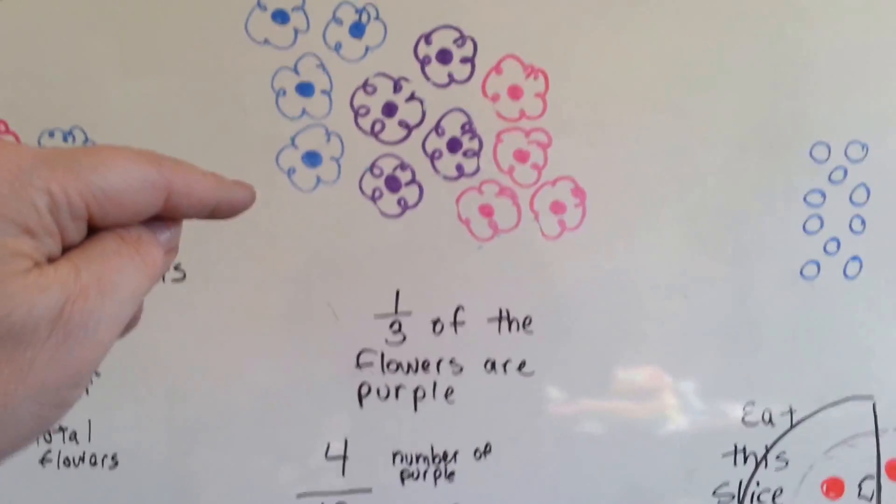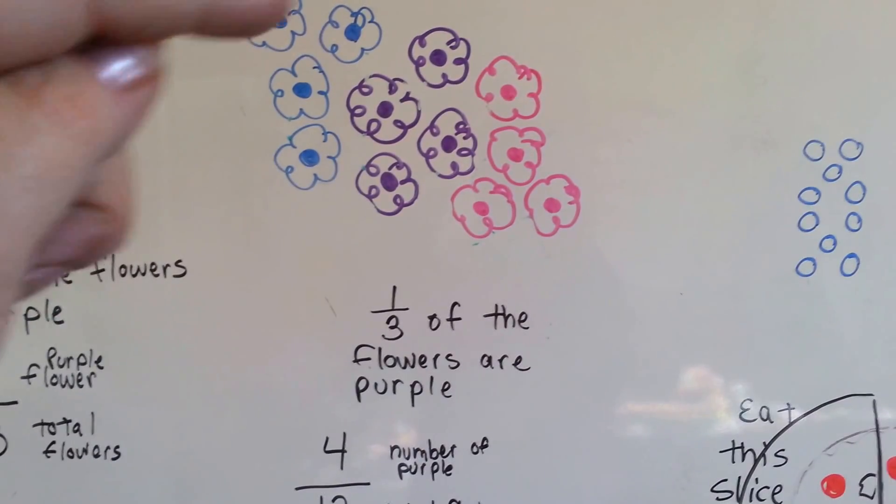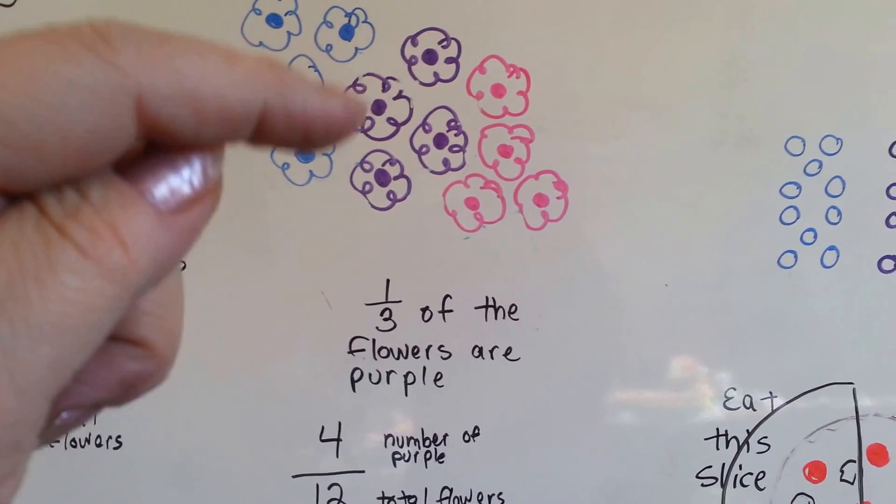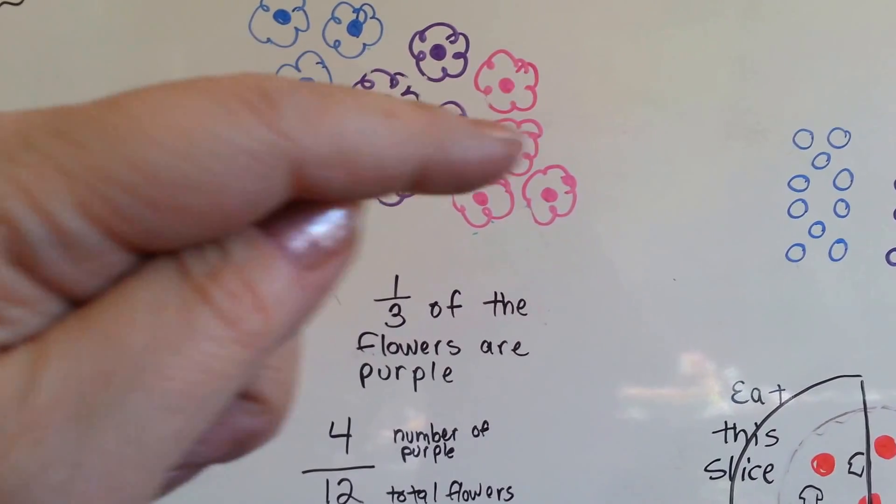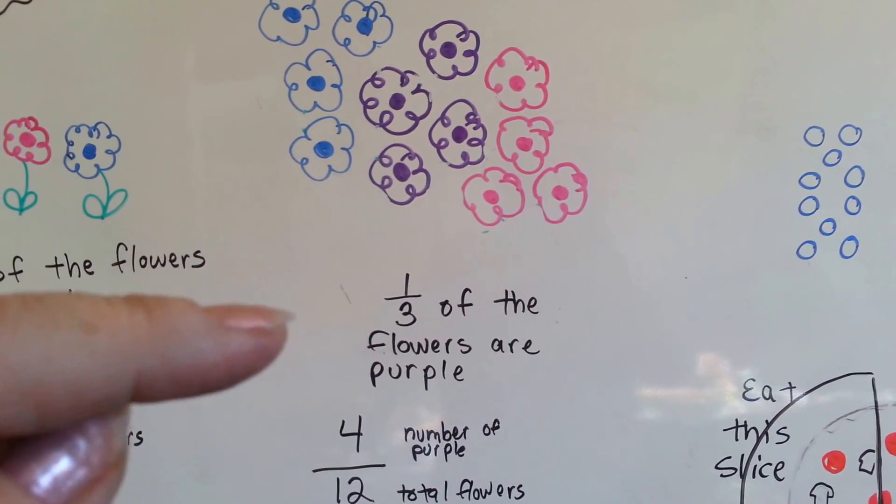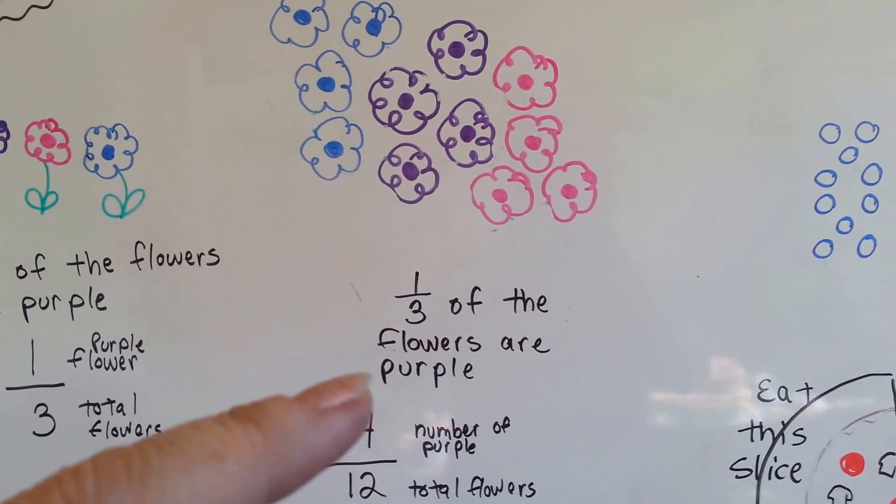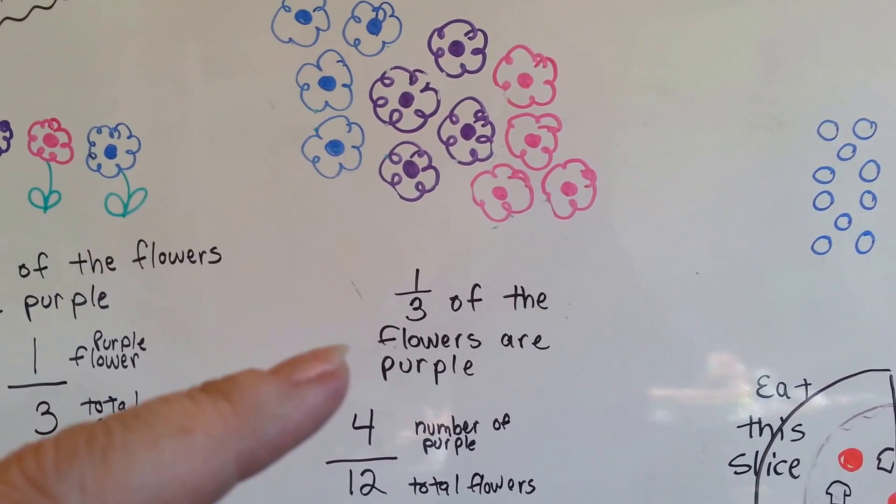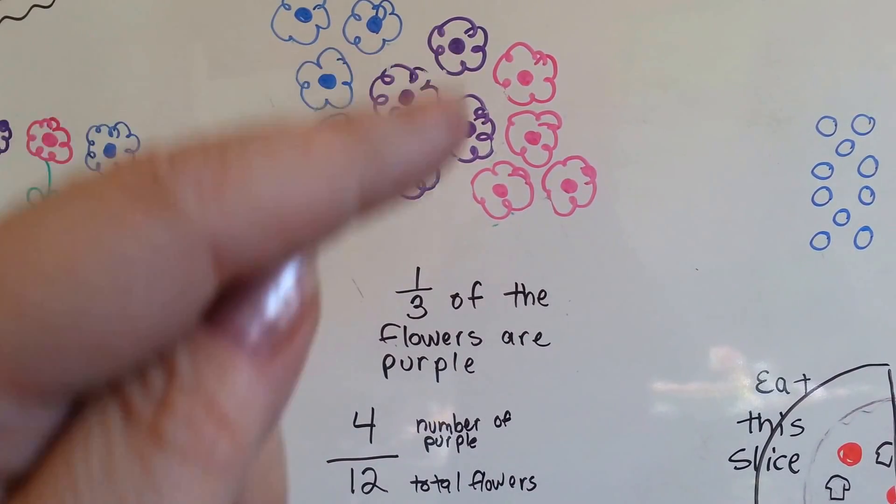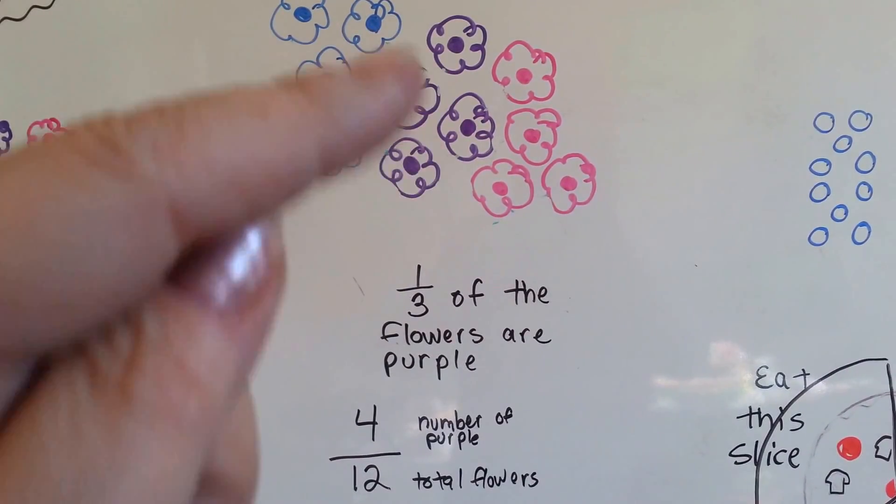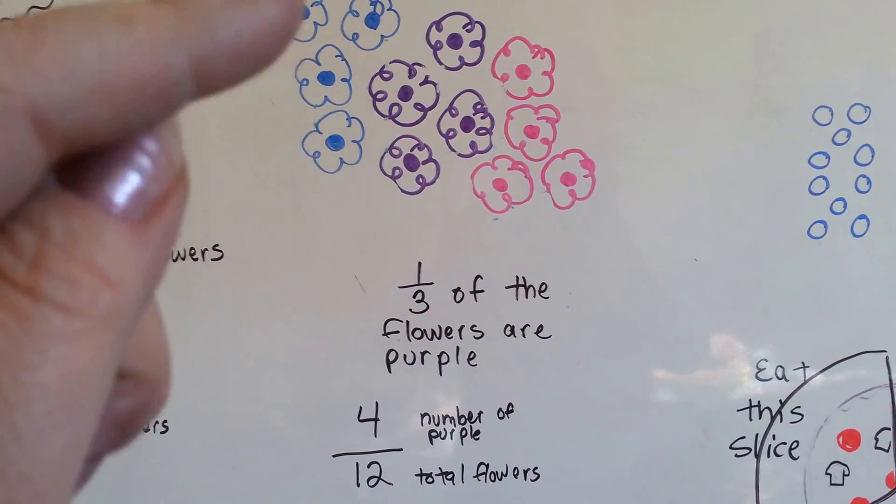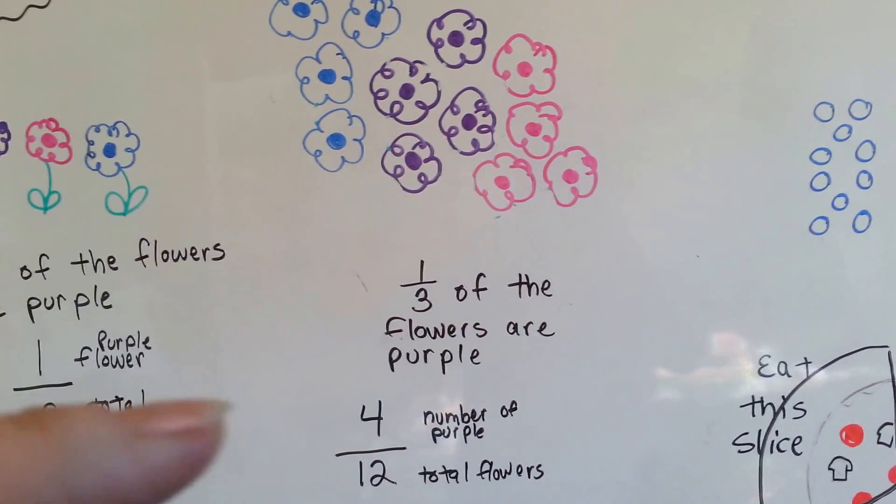Now let's take a look at this one. We've got one, two, three, four blue ones, one, two, three, four purple ones, and one, two, three, four pink ones. One-third of the flowers are purple. Right here, these four. Here's a group of four, here's a group of four, and here's a group of four.